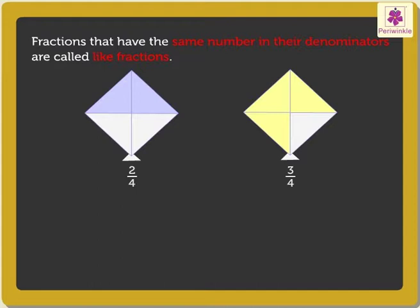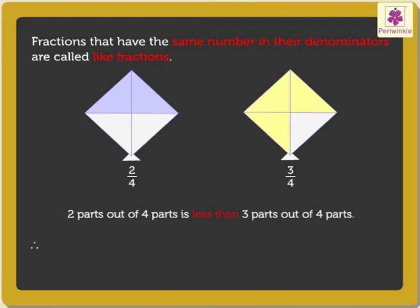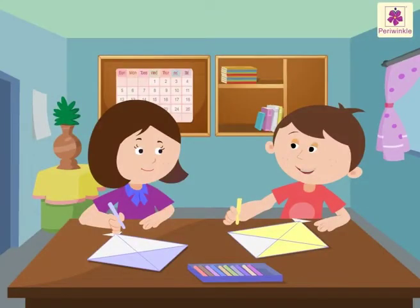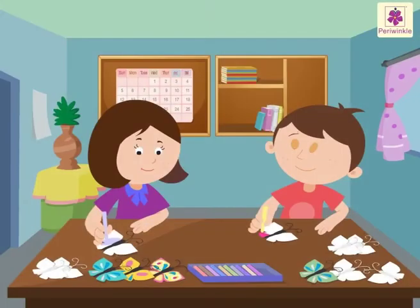Two parts out of four parts is less than three parts out of four parts. Hence, two-fourths is less than three-fourths, or three-fourths is greater than two-fourths. Andy wins this round as he colored more than Anaya.